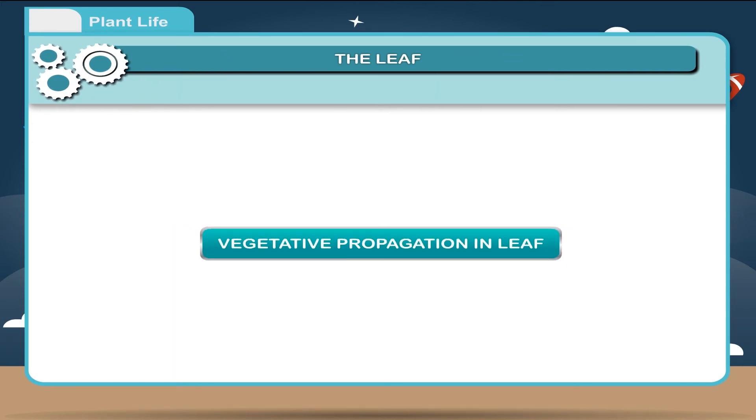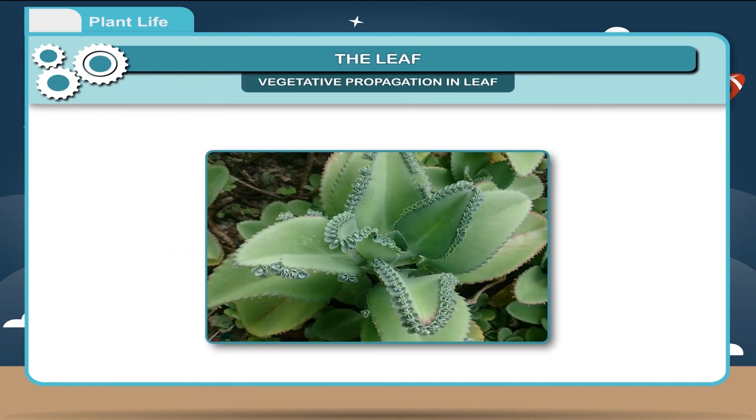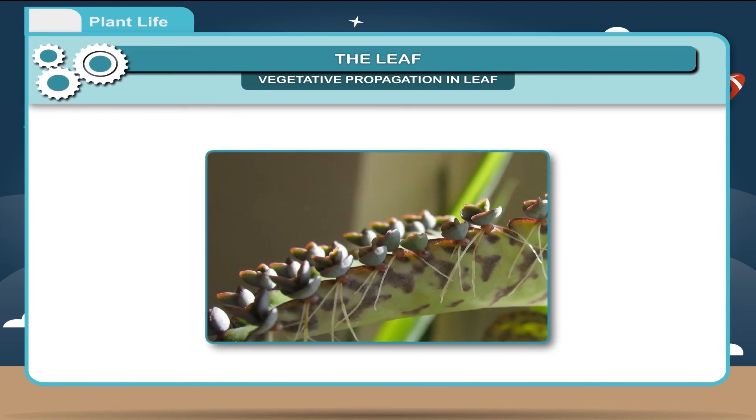Vegetative propagation in leaf. Some plants, like the bryophyllum, have fleshy and thick leaves bearing buds on its edges. These buds on the edges of the leaves grow as new plants. When leaves fall down on the ground, the buds start growing.